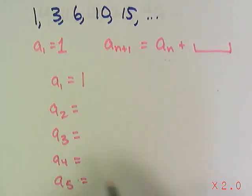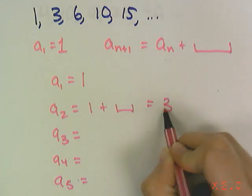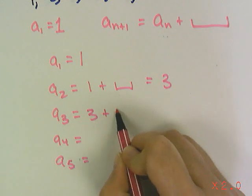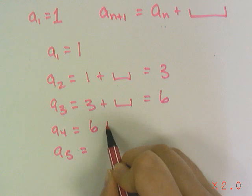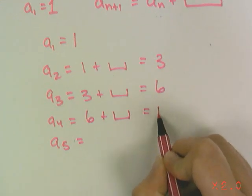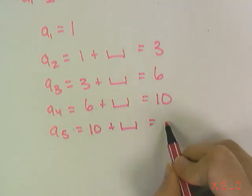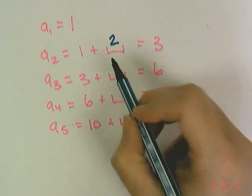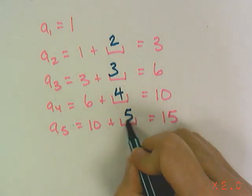Now a sub 2 is going to take 1 and add something and give me 3. A sub 3 is going to take 3, add something, and give me 6. A sub 4 is going to take 6, add something, and give me 10. A sub 5 is going to take 10, add something, and give me 15. So now I go back and think, what's being added? 2 is being added there, 3 is being added there, 4 is being added there, and 5 is being added there.